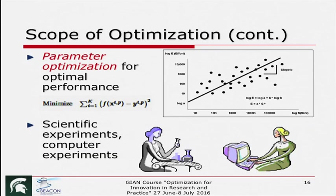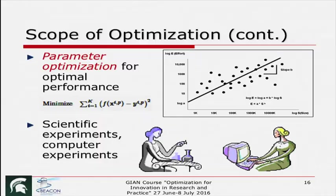Another class of problems is parameter estimation. All of you have used regression — a linear fit through a set of data. You know the software uses an optimization method: least squares optimization. It finds a line for which the average perpendicular distance from each point to the line is minimum. If tomorrow you have a different set of data points and you expect a periodic curve, you cannot use the linear-fit software. But now that you know there is an optimization method inside, you can come up with your own optimization method with the periodic curve you are expecting.